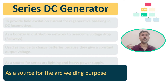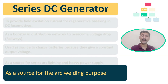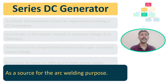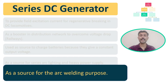The next application for the DC series generator is that it can be used as a source for arc welding purposes. Arc welding also requires heavy current, so all applications requiring heavy current can make use of this series DC generator.